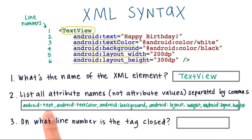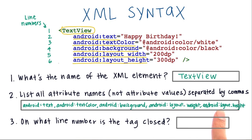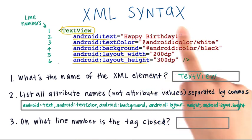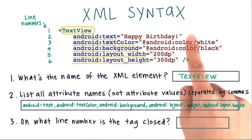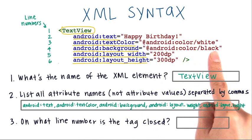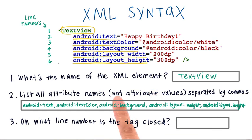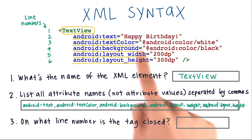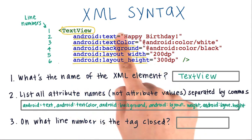The attribute names include Android text, Android text color, and so on. If you put the attribute values like 'happy birthday,' or the color white or black, that's incorrect — because those are the attribute values, and the question was asking for the names.